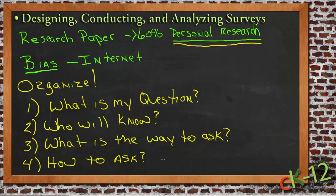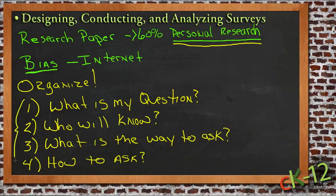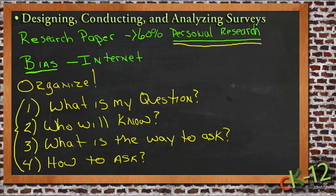The last couple of steps include conducting the interview and then analyzing the results, which are obviously very important. We spent the last couple of lessons talking about ways to analyze results. These four points are very important for getting organized so that when you conduct a survey, it makes sense and gives you information you can use when putting together your histogram, stem and leaf plot, or box and whisker plot.